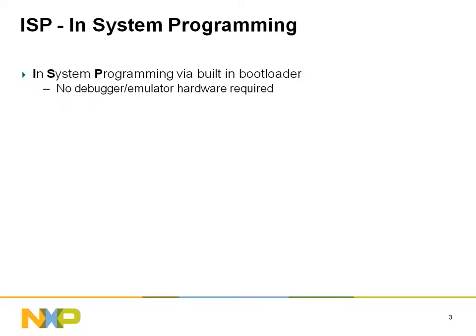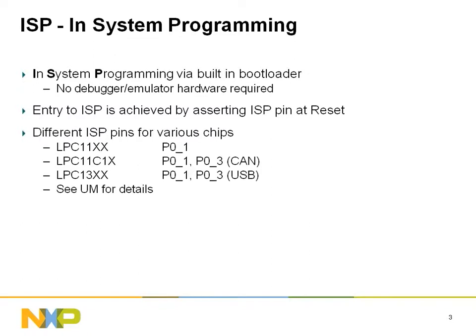The 1100 and 1300 families of parts support in-system flash programming by means of an on-chip bootloader. The ISP feature is activated by asserting a low logic level on P01 during system startup. On the 1100 and 1300 parts, P01 may be referred to as the ISP pin for this reason.